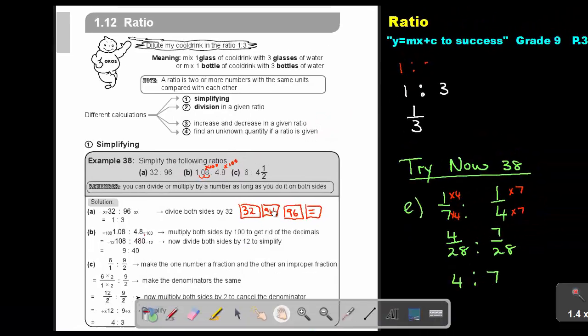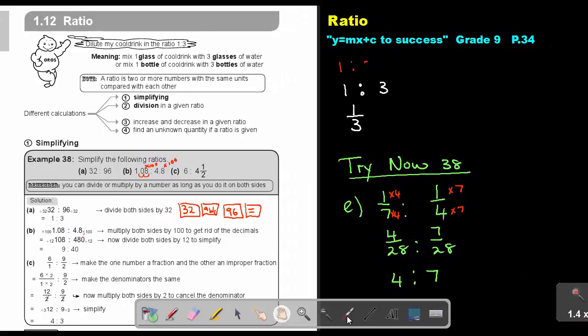Can you remember there's four types of sums that they can ask you in ratio? They can ask you to simplify. They can ask you a division into a given ratio. Then they will give you the total and you will divide it into a given ratio. Or they can ask you to increase or decrease in a given ratio. So we call this method three.